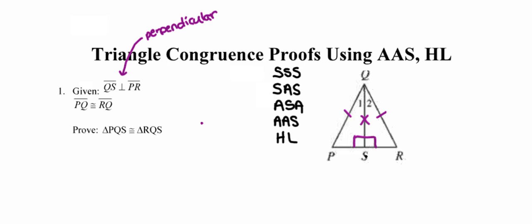Now I'm set to see which of the five congruency statements this pair of triangles falls under. There are only two pairs of congruent sides, so this isn't SSS. I'm tempted to say SAS, but remember that for SAS your angle has to be in between your pairs of sides — that would be angles 1 and 2, which I don't know for sure are congruent. So this is not SAS.